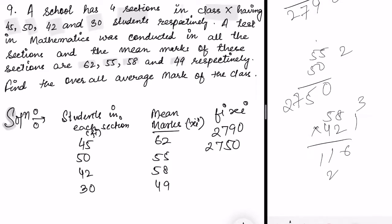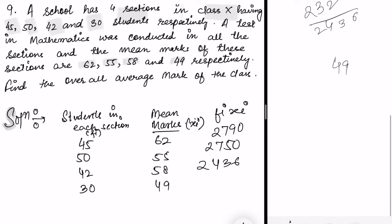This gives 2436. And 30 into 49: 9×3 is 27, 4×3 is 12 plus 1 is 13, 14, giving 1470. Now find the total, the summation of fi×xi.